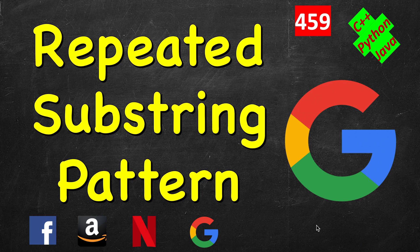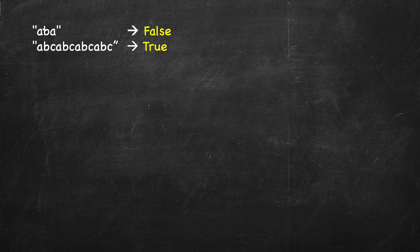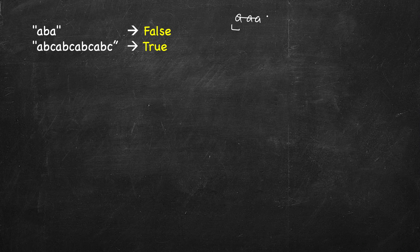In this problem we have to check whether the given string is formed by repeating some substring. For example, if you look at the string 'aba', there is no such substring which you can repeat multiple times to form 'aba'. If you take 'a' and repeat it, you cannot get 'aba'. If you take 'ab' and repeat it, you get 'abab' but not 'aba'.